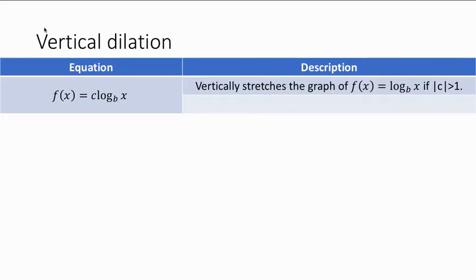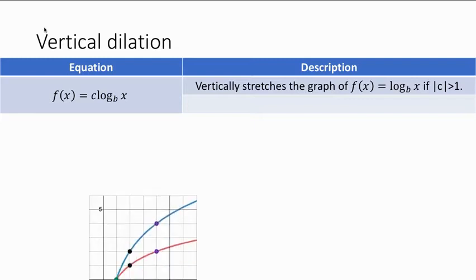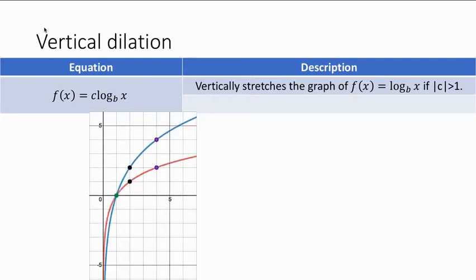So let's start by talking about vertical dilations. Vertical dilations happen when you have something like this equation: f of x equals c times the log of base b of x. If the absolute value of c is greater than 1, that's going to vertically stretch the graph. The red function is f of x equals log base 2 of x, and our blue function is g of x equals 2 times the log base 2 of x.